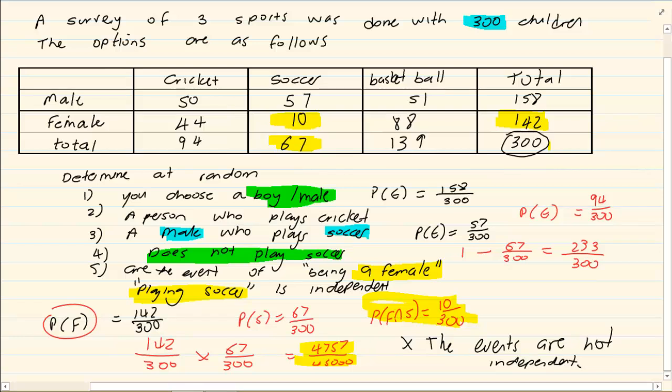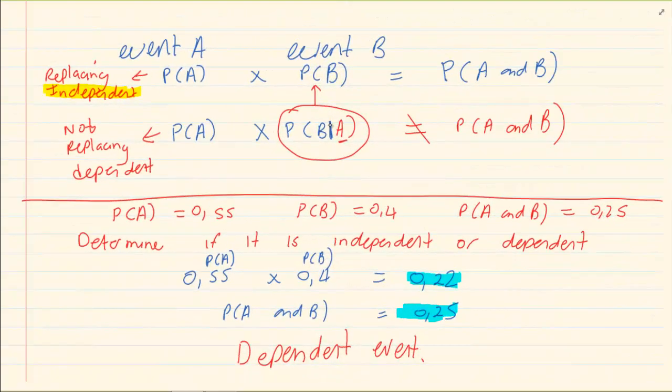Now look, I am not saying it is dependent. Can you see? I am simply saying the events are not independent. I am answering the question. You must not just say it is dependent. Because even though the statement says that if they are not equal they are dependent, you are not allowed to say it. You must simply say they are not independent.